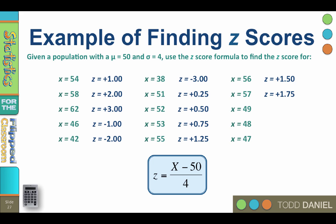Let's go in the other direction. An x of 49, one point below the mean, z equals negative 0.25.